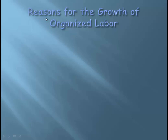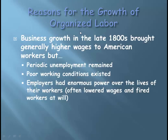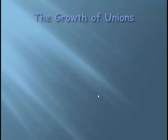Let's get a peek at why organized labor took place — why different groups got together and said we need to create labor unions. It obviously deals with the working conditions. Business grew in the late 1800s — the Carnegies, the Rockefellers, corporations. Generally workers were making more money, but there was still periodic unemployment. There were terrible, poor working conditions in factories in terms of hours and safety. Employers had enormous power over workers' lives — they often lowered wages and fired workers at will. There was no minimum wage back then, so a company could just decide to lower wages and you'd be making less money.